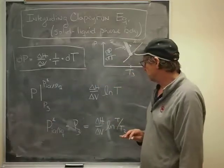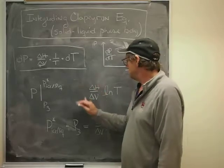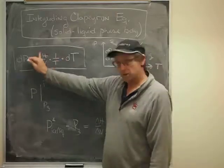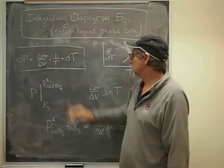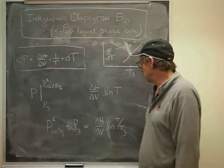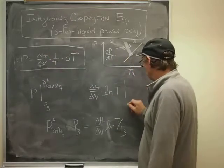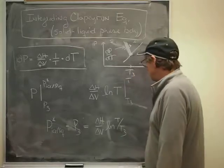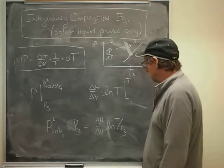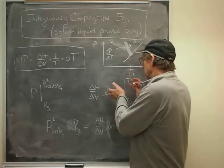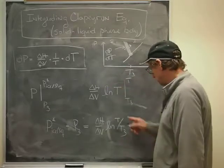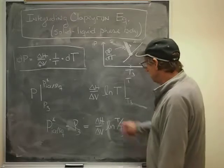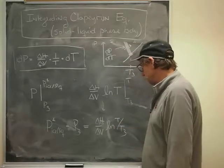On the right-hand side of that equation, we have this. We're going to consider that a constant. So the integral of 1 over T dt is just log of T. And that we would also integrate from T3 up to some arbitrary temperature. And because of the way logs work, that's going to be the log of T minus log of T3, which turns into that ratio. So the right-hand side of the equation turns into this.